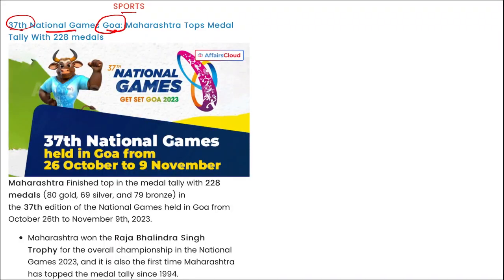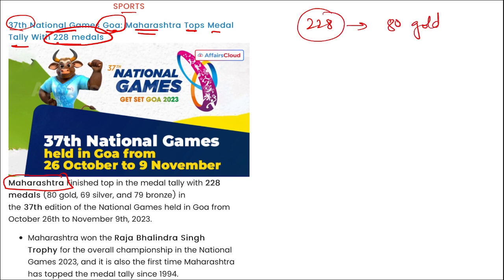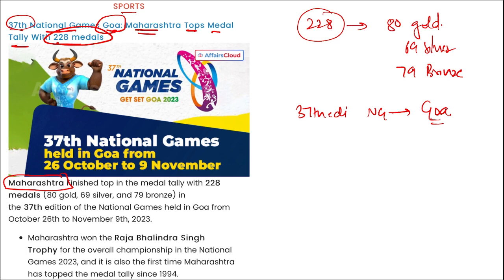In sports: the 37th National Games were held in Goa, and Maharashtra topped the medal tally with 228 medals — 80 gold, 69 silver, and 79 bronze. Maharashtra also won the Raja Bhalindra Singh Trophy for the overall championship. Importantly, this is the first time Maharashtra has topped the medal tally. Service Sports Control Board was on second spot, followed by Haryana third, Madhya Pradesh fourth, and Kerala fifth.